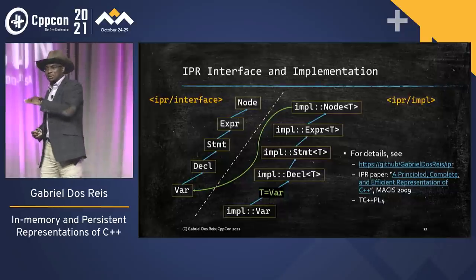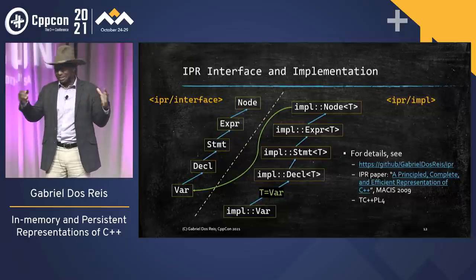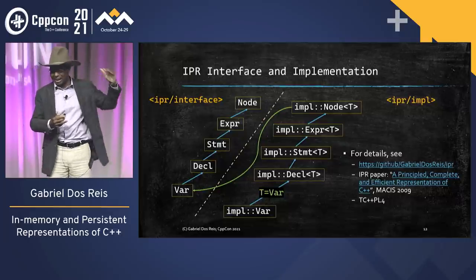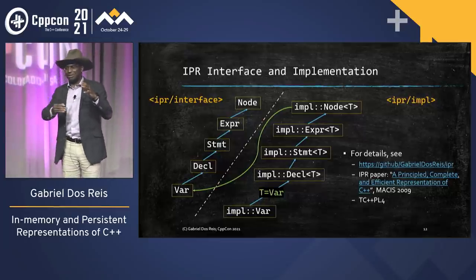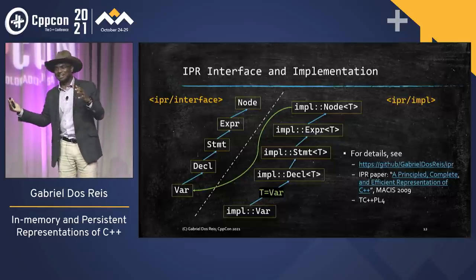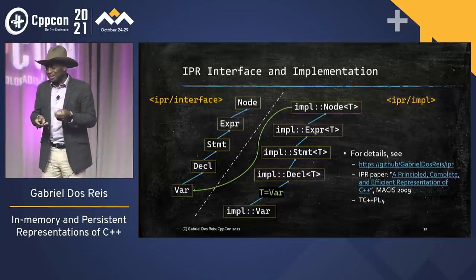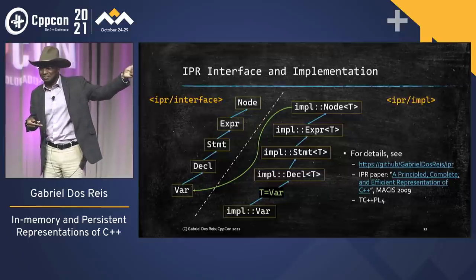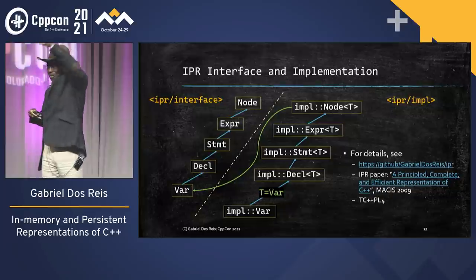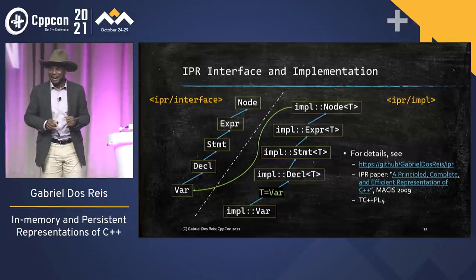On the implementation side, we use templates to capture the commonalities, and you have stepwise refinements on the implementation side too. When I want a concrete class — a concrete implementation for Var — all I need is to tell the implementation of Decl that this Var implementation is implementing the Var interface. And then everything just falls into place. You can download the source code and see the details. It's also explained in the IPR paper we wrote in the 2000s, and if you have the C++ Programming Language, fourth edition, there is a section dedicated to the IPR design principles.